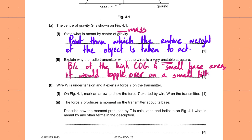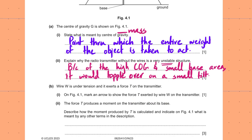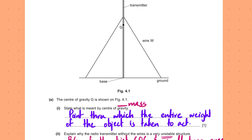Wire W is under tension and exerts a force T on the transmitter. Mark an arrow to show the force T exerted by wire W on the transmitter. Tension is always marked away from the object being considered, along the rope. So this transmitter would feel as if it is pulled by the wire towards the ground.